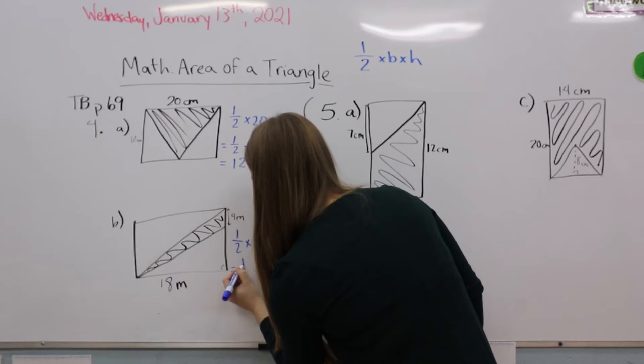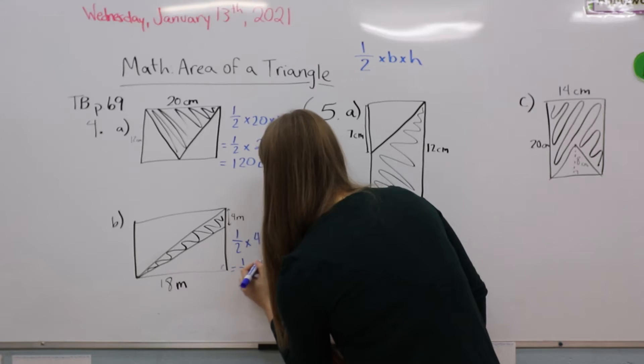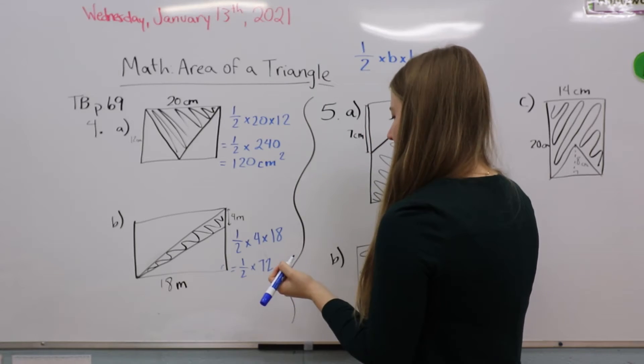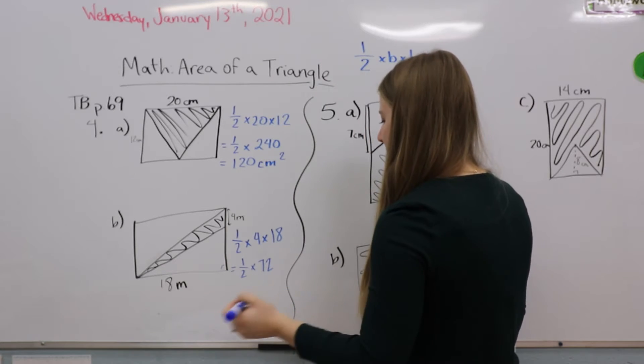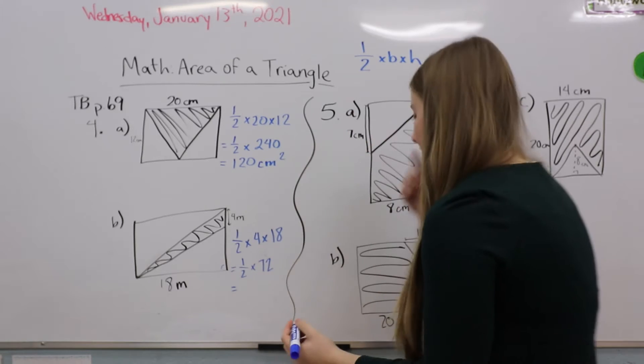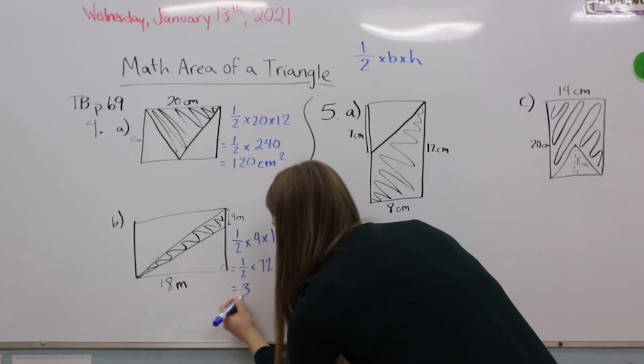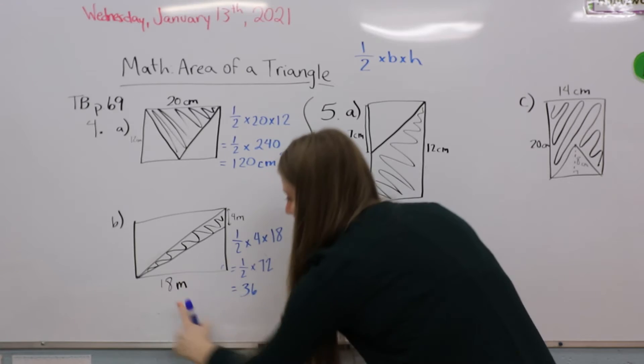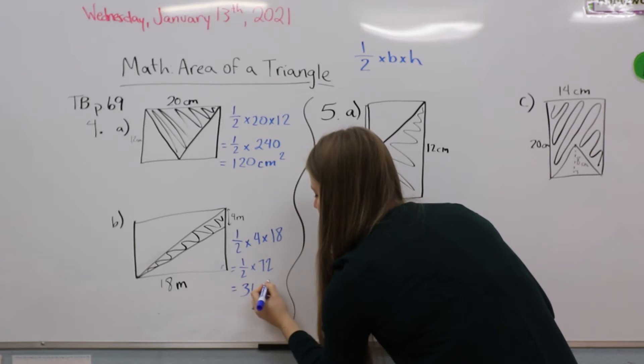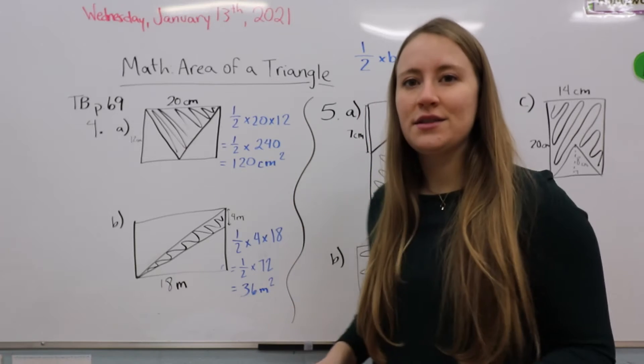Again, we're going to do half times 4 times 18, which equals half times 72, which equals 36. Our units are meters, so it's 36 meters squared.